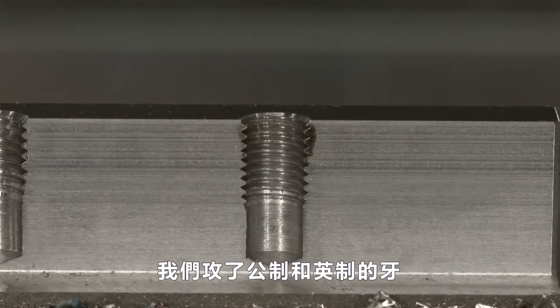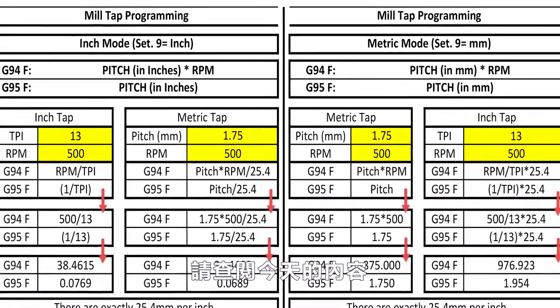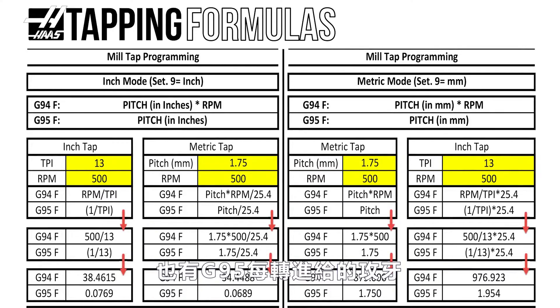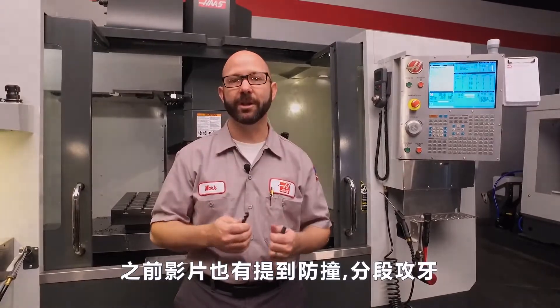Well, we've done it. We've programmed both a metric and an inch tap using our G84 CAN cycle. Now, be sure to click on today's bonus content. We've created a tapping document that covers all the formulas we use today, as well as G95 feed per revolution tapping.